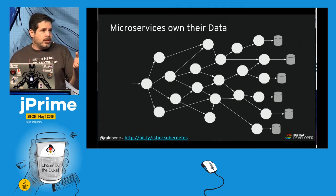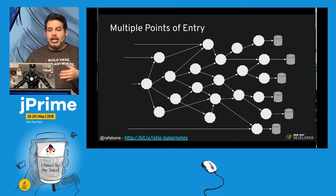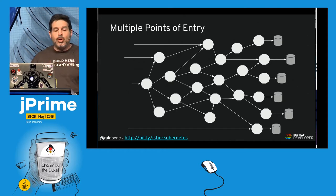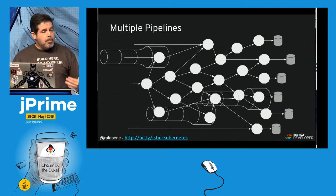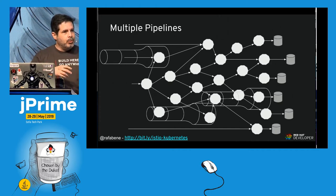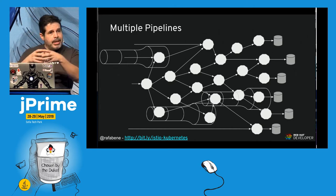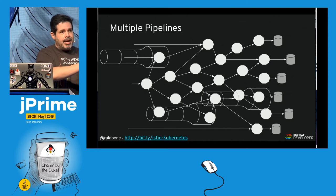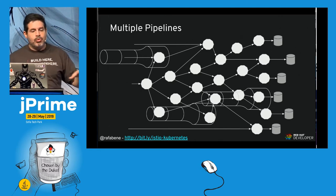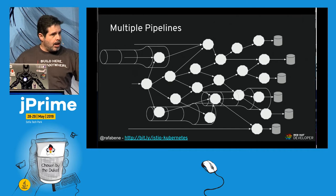If each microservice has its own data, they can have multiple points of entry and multiple pipelines. We won't just throw a jar file over the wall — we need to get source code from a Git repo, push it through a pipeline to reach production. So for every microservice, you will have its own pipeline.